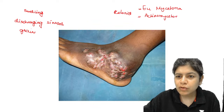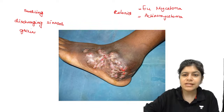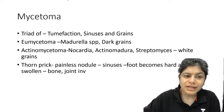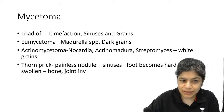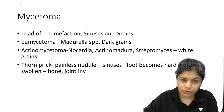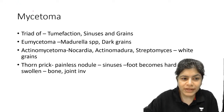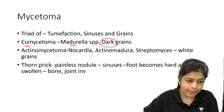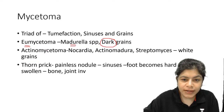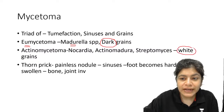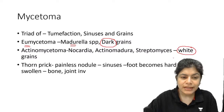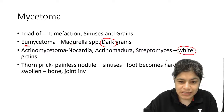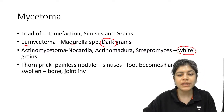There are two kinds of mycetoma. Eumycetoma is of true fungal origin, caused by Madurella species, and is characterized by dark grains. Actinomycetoma is caused by Nocardia, Actinomadura, or Streptomyces, and is characterized by white grains. The typical history is a thorn prick leading to a painless nodule, which then starts discharging sinuses. The foot becomes hard and swollen with possible bony and joint involvement.